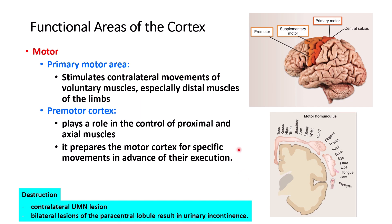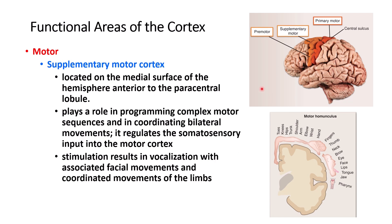The supplemental motor cortex is anterior to the precentral gyrus and also visible in the medial view. Similar to the premotor cortex, it has maps of different muscle movements and sequences — which movement should be done first, second, or simultaneously — so it is involved in higher, complex movements. These movements are usually bilateral, and it is important for vocalization, facial expression, and limb movements.